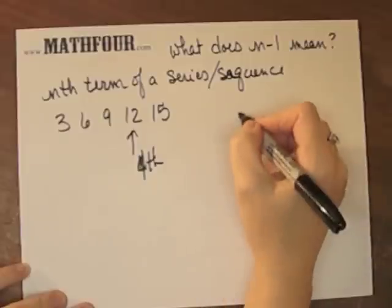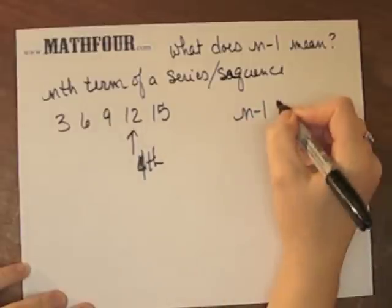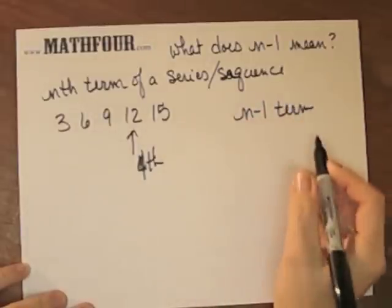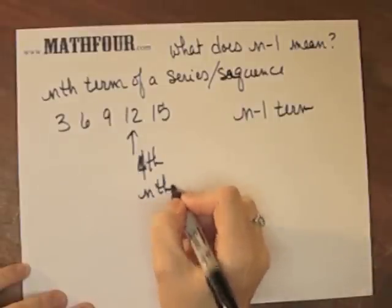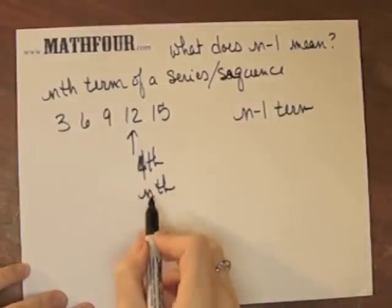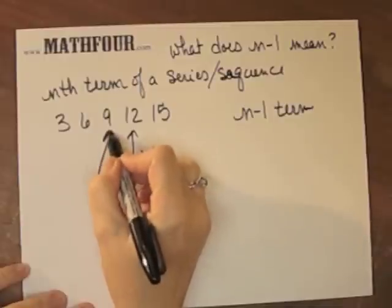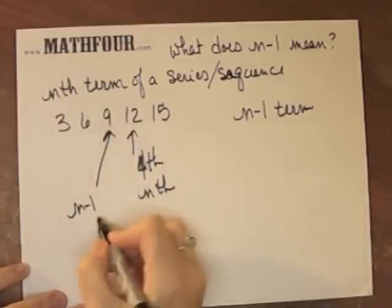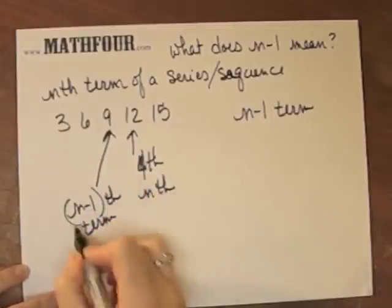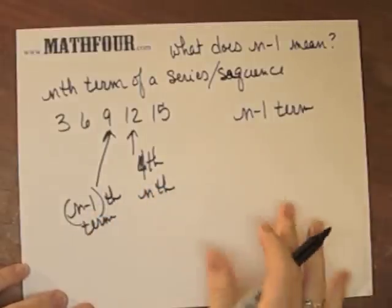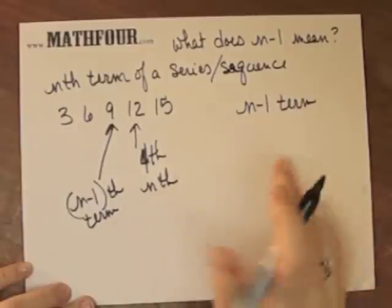So if I want the n minus 1 term, well, if this is the n, the nth term, this is the n minus 1 term. Technically, I guess you could say the n minus 1 term, which is kind of weird, but it's doable.